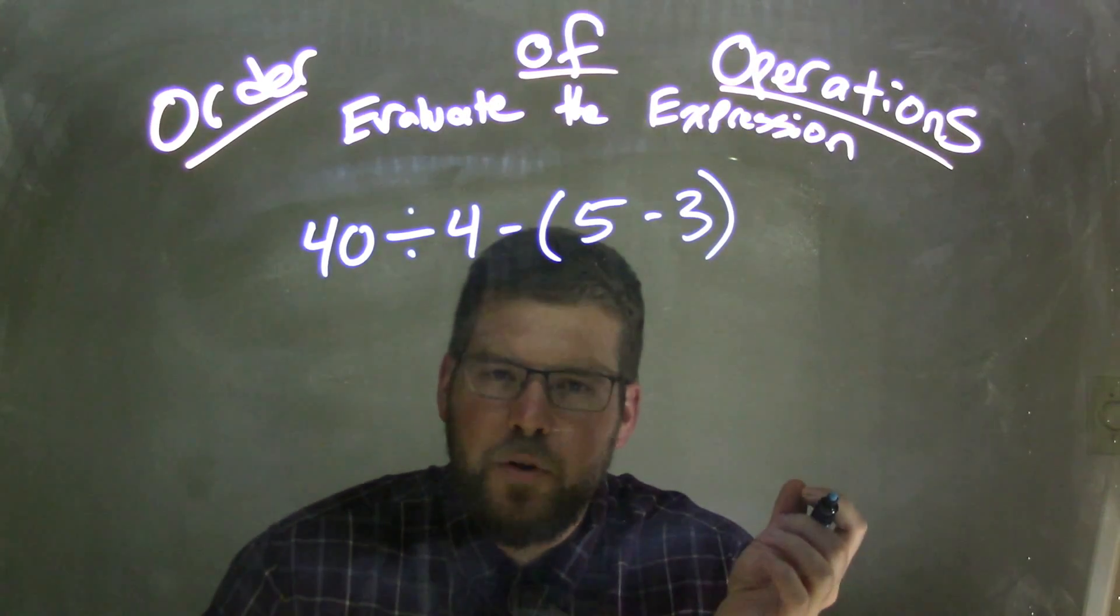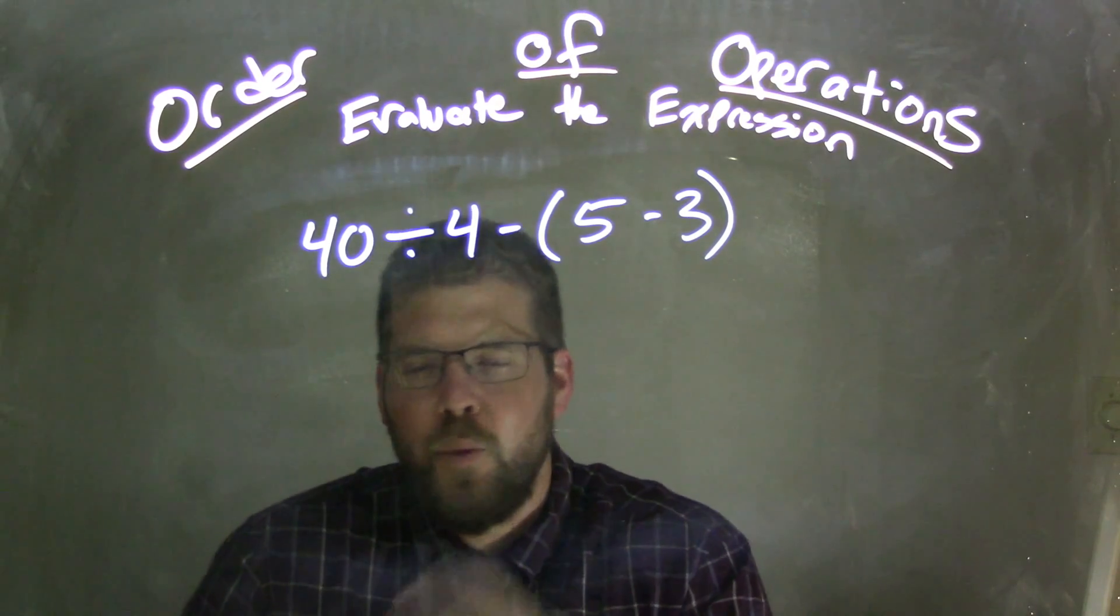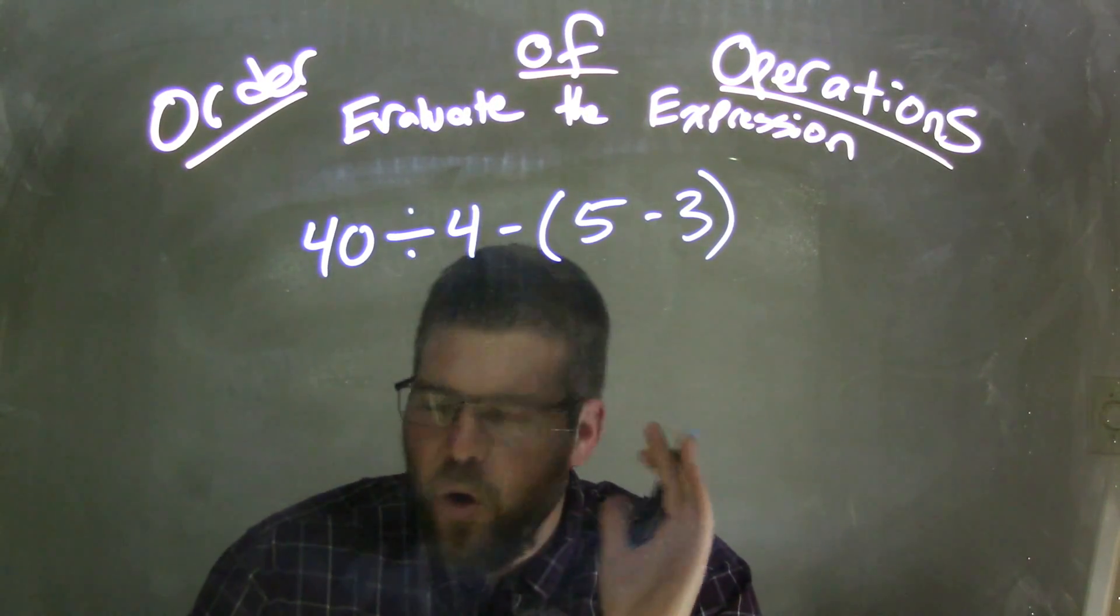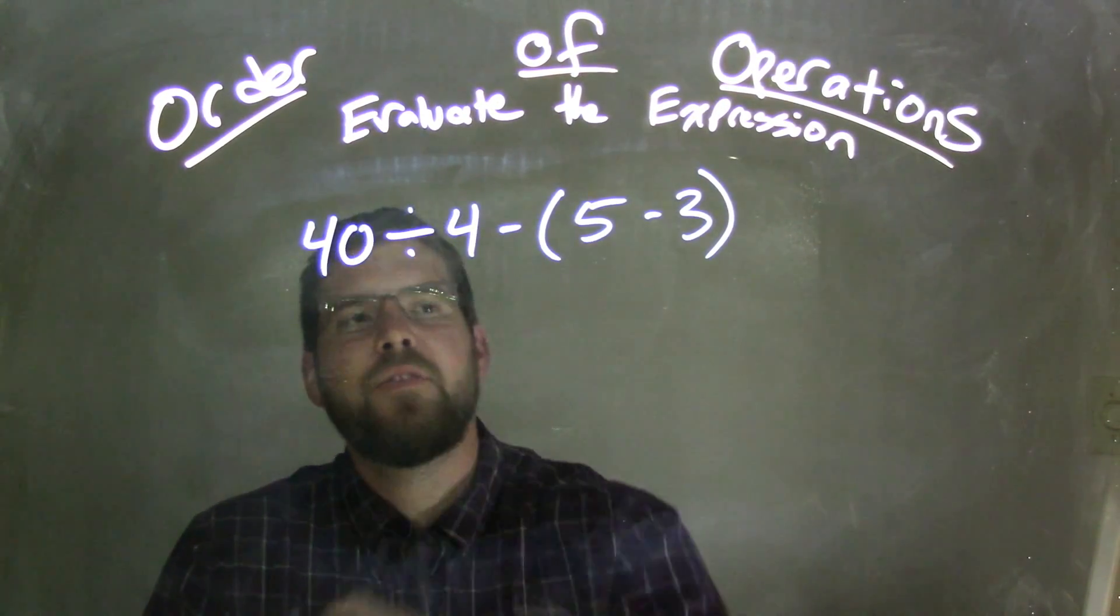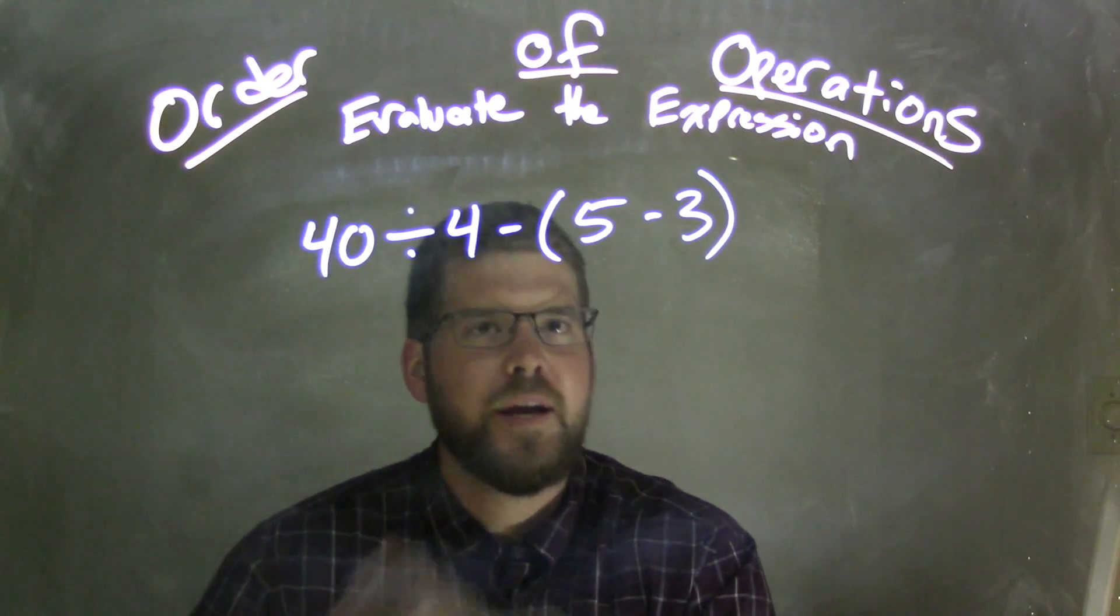Well, what should we deal with first? I have the parentheses there. Whenever I see parentheses, that is always going to be first, right? So parentheses is first. 5 minus 3 comes out to be 2.